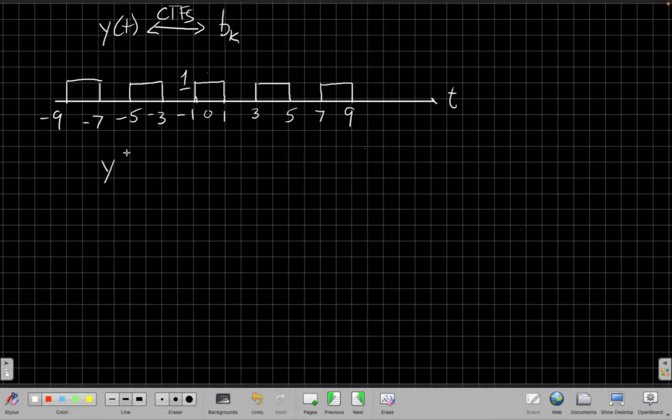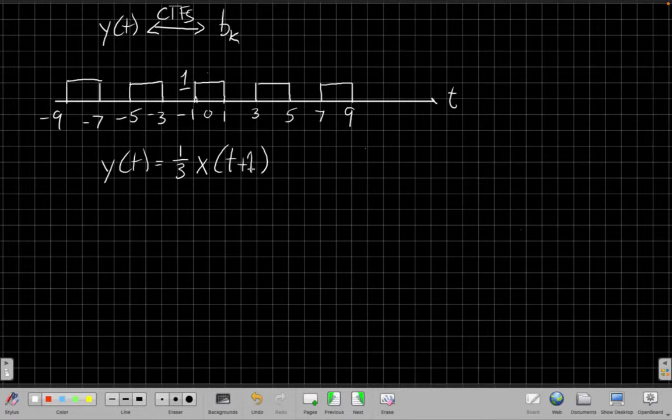And so I can say y(t), I can write in terms of x(t) as 1 third times the amplitude times x(t+1), so shifting it one sample to the left.